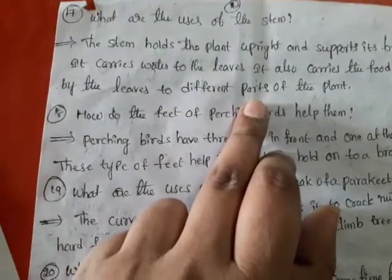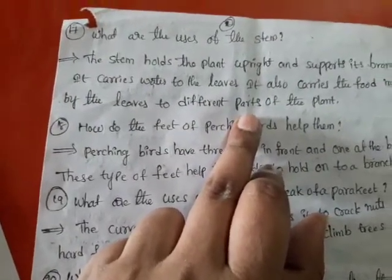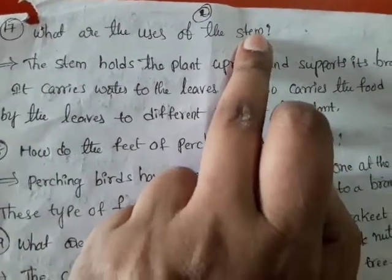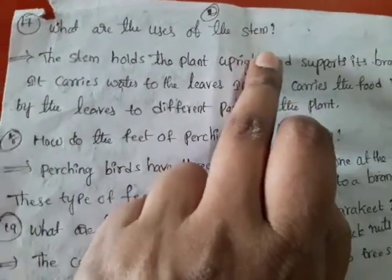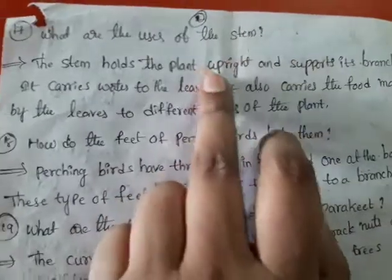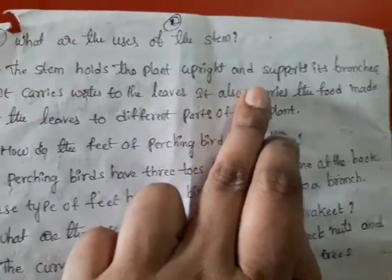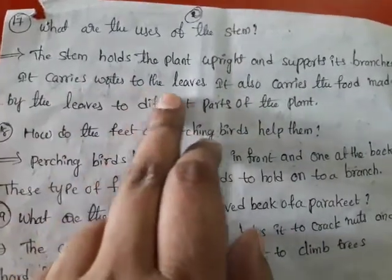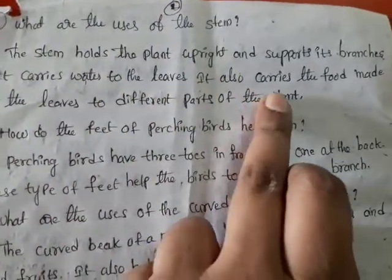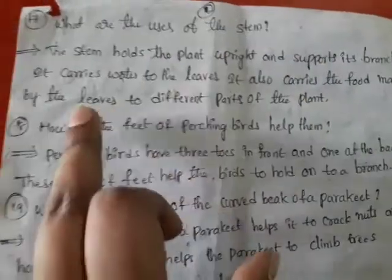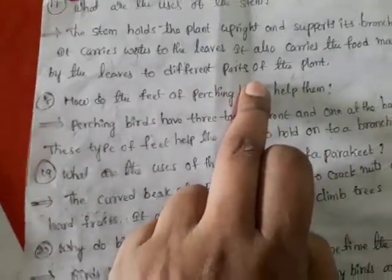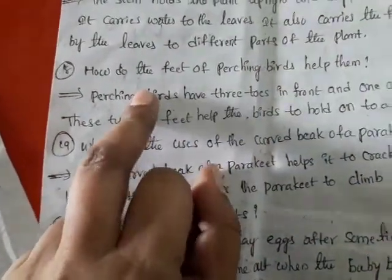The total plant parts are: root, stem, branches, and leaf. Okay, next — 18th question.